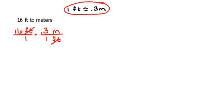Now our feet will cancel top and bottom, and the only units we have are meters, so we're good to go. When we multiply 16 times 0.3, we get 4.8 meters.